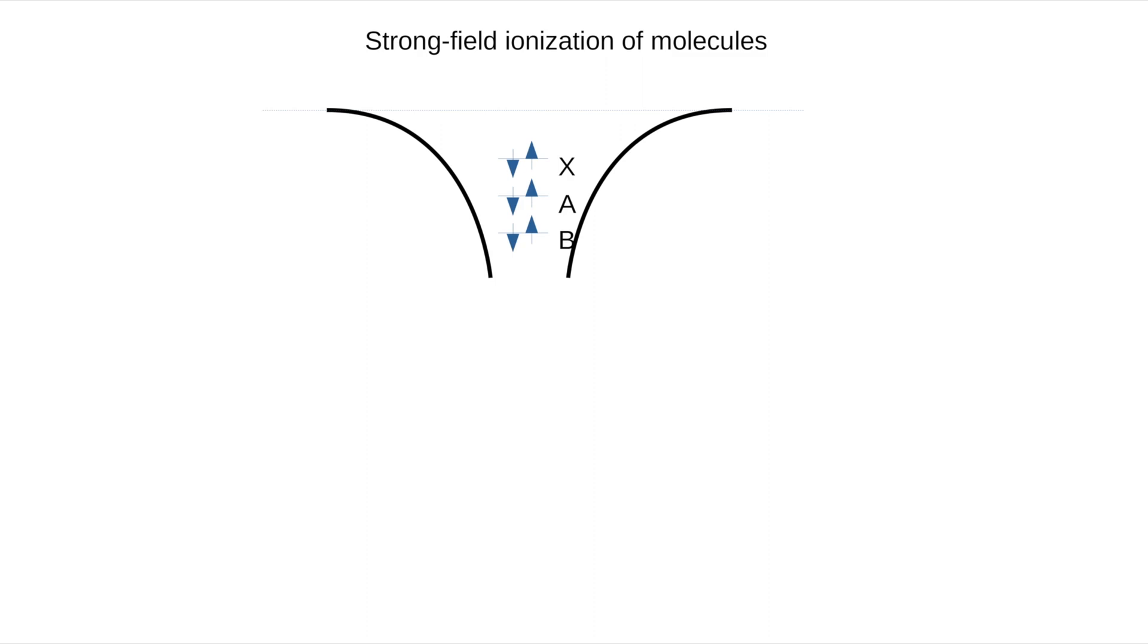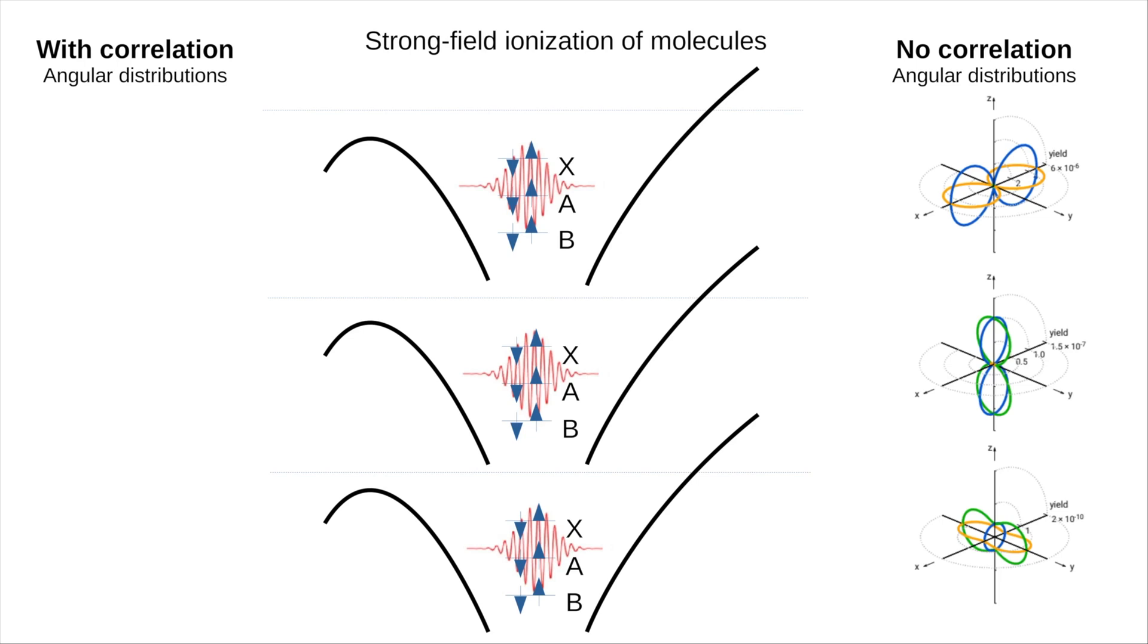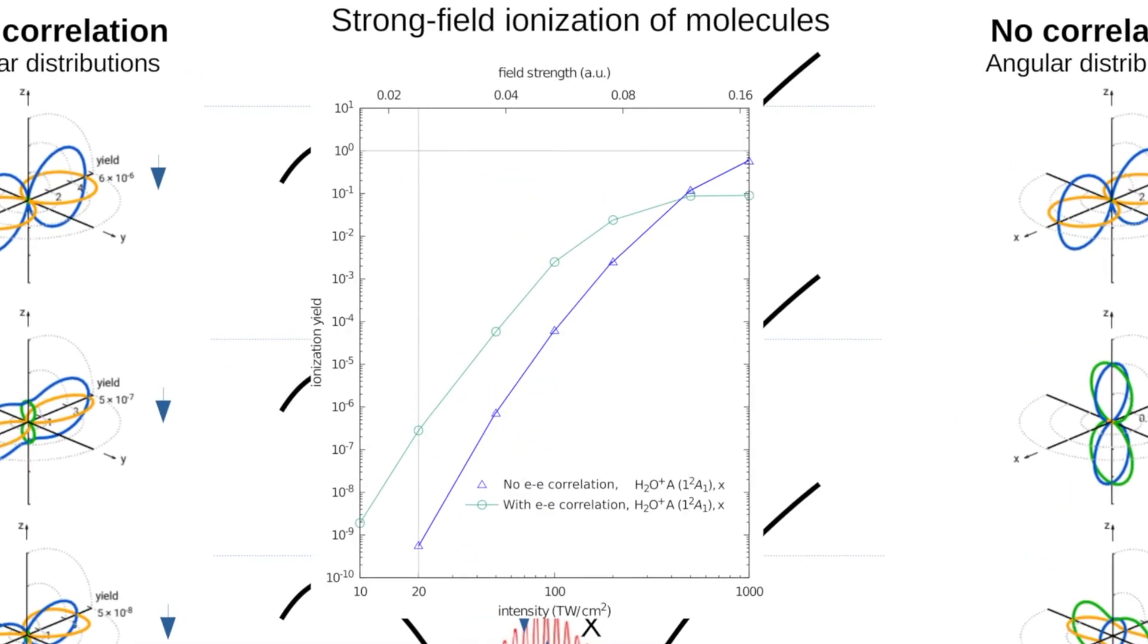When energy of the laser field becomes comparable to the energy that is holding electrons inside the system, the bound states become resonances and we observe tunneling ionization. This process can be strongly influenced by electron correlation too, as was predicted by our colleagues some time ago. It was exciting for us to observe in our calculations how the intensity of the strong laser field can be used to suppress or enhance the correlated electron motion.